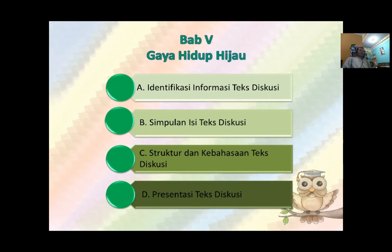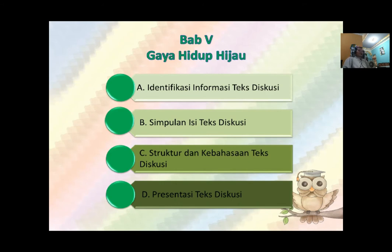Pada semester kedua kelas 9 ini, kita akan memulai pembahasannya dengan bab 5, tentang gaya hidup hijau topiknya. Di sini kita akan berdiskusi tentang topik hidup hijau ini. Ada beberapa pembahasan dalam bab ini: yang pertama identifikasi informasi teks diskusi, yang kedua simpulan isi teks diskusi, yang ketiga struktur dan kebahasaan teks diskusi, dan yang keempat adalah presentasi teks diskusi.